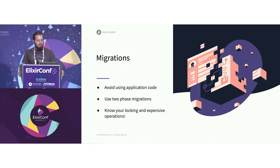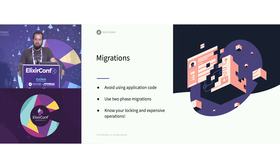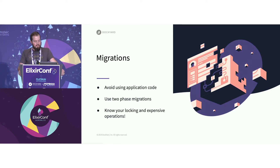For migrations, avoid using application code. That's predominantly because you're not going to notice when you delete application code that breaks a migration, because you've probably already run that migration locally. Two-phase migrations — that's probably one of the bigger tips that a lot of people don't follow and is extremely useful, which I'll illustrate here in a second.